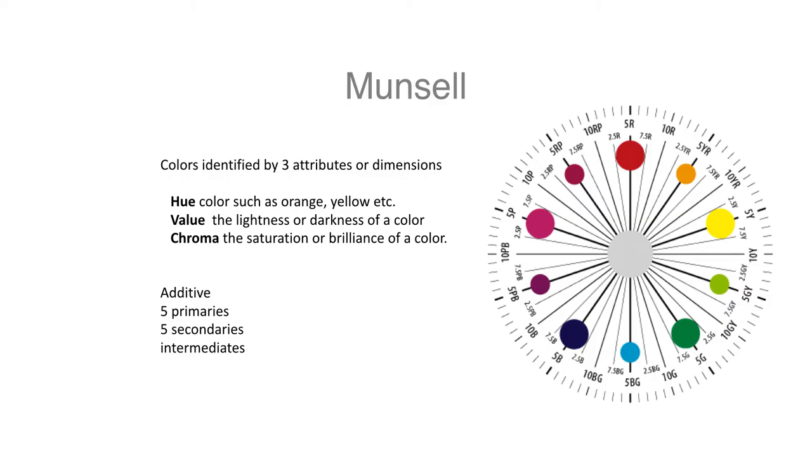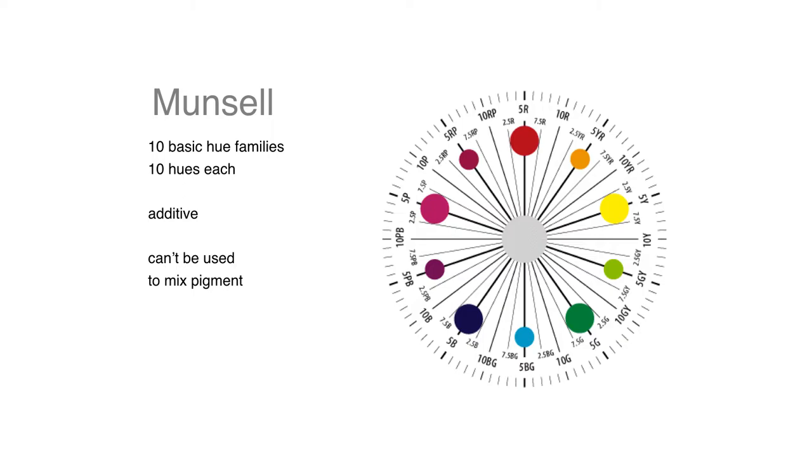and magenta sits across from a green. In some ways, it has some additive understanding in terms of complementary relationships. But Munsell doesn't necessarily follow the idea of complements and neutralization via the complements.